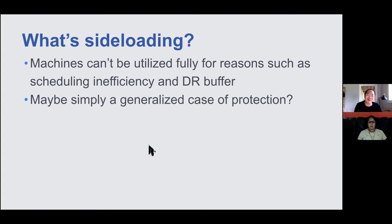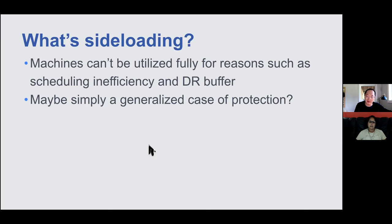If you think about it, it's not just the DR buffer — with a large enough fleet, you're bound to have scheduling or allocation inefficiencies ending up with extra capacity in many places. The question is whether we can utilize that for something useful without impacting what the machines are originally for. This is a generalized case of the previous protection scenario: instead of a memory leak, maybe we can substitute something productive. We just need to protect the main workload from the side workload the same way.